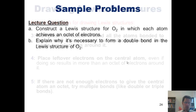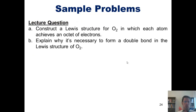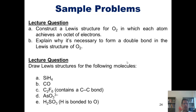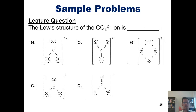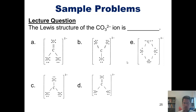Here are some lecture questions on Lewis structures. Question one: construct a Lewis structure for O2 in which each atom achieves an octet of electrons. Question two: explain why it's necessary to form a double bond in the Lewis structure of O2. Question three: draw Lewis structures for each of the following molecules. And another question: what is the Lewis structure for the carbonate ion? I'm not going to answer these questions, but will instead let you answer them for yourselves.